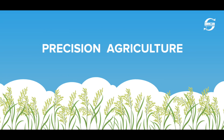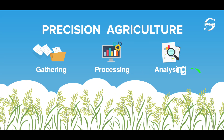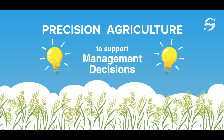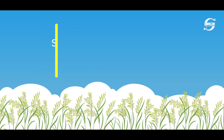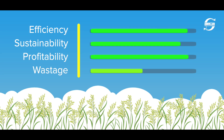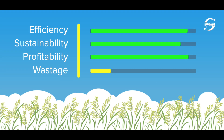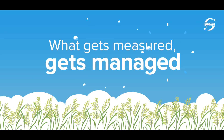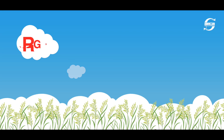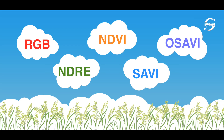Precision Agriculture is the practice of gathering, processing, and analyzing agricultural data to support management decisions. An approach that aims to improve efficiency, sustainability, and profitability by optimizing resources and reducing wastage. It uses the principle: what gets measured, gets managed. This is precisely why it is important to measure the right things.